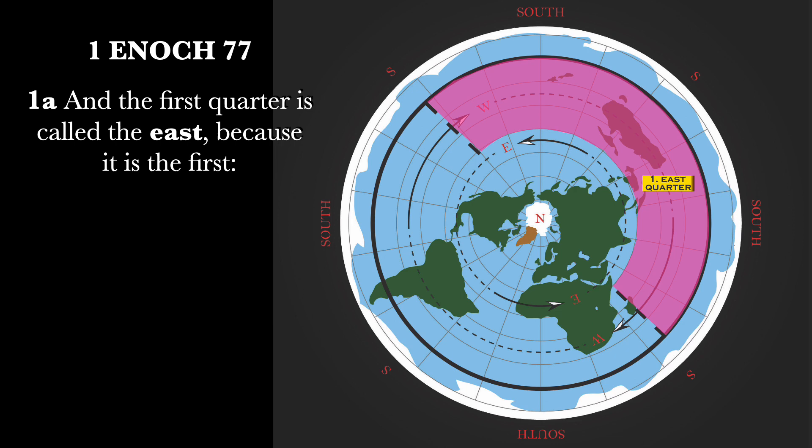Open your book of 1 Enoch to chapter 77, beginning in verse 1, this is part A: 'And the first quarter is called the East, because it is the first.' Now, once again, Enoch is drawing from the context in which he has already well defined. Some try to read something like this and forget such context, which makes no sense. So we map the East with this full context of the rest of the description here. The East is cut off where it is, but this is essentially the East, and we'll explain this as we go.